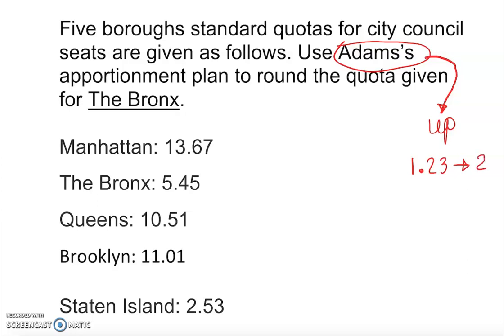If it is 1.53, it's still going to be 2. If it is zero dollars fifty cents, it's still going to be one dollar. He's going to motivate and reward you for working a little bit, for having something. So you work it out.